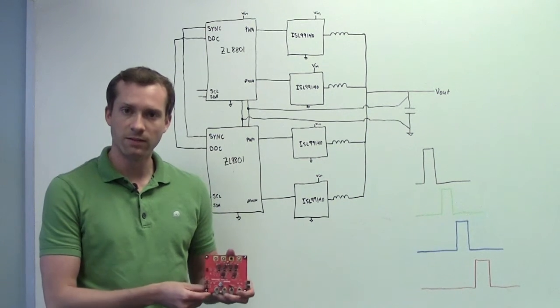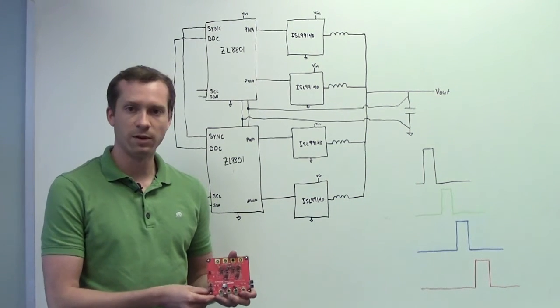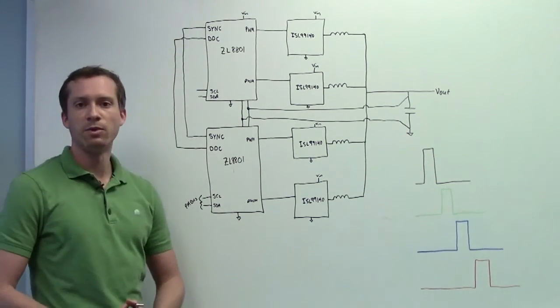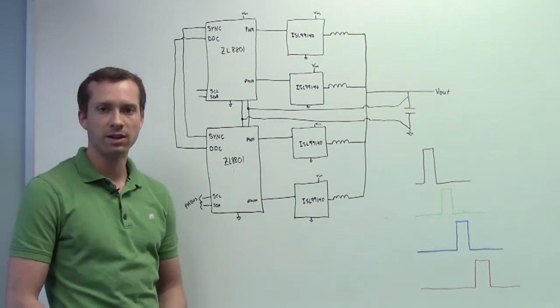I've got the eval board right here. This is showing a four-phase design. On the board behind me, I show all the important connections that are required for a current share application.